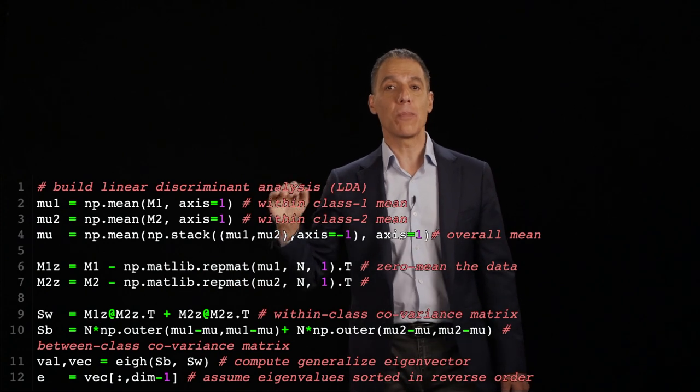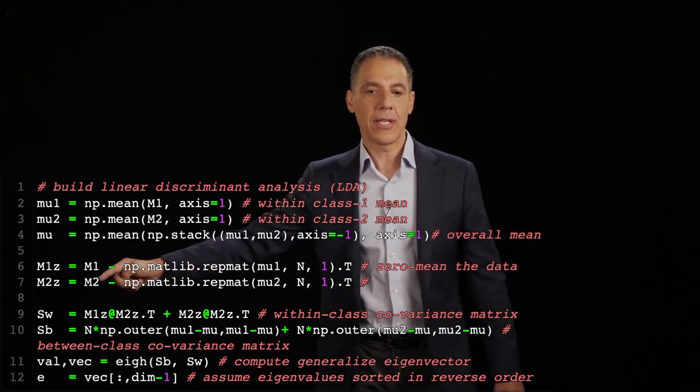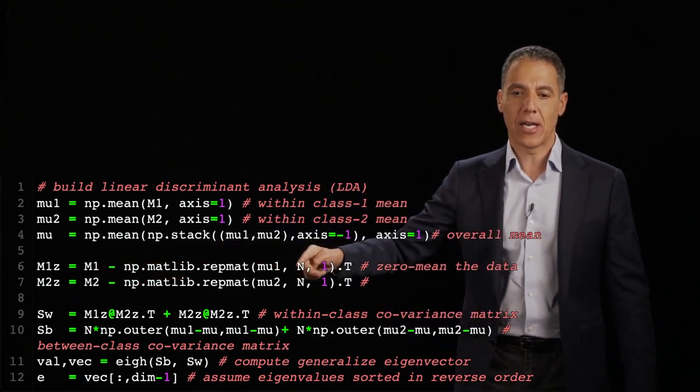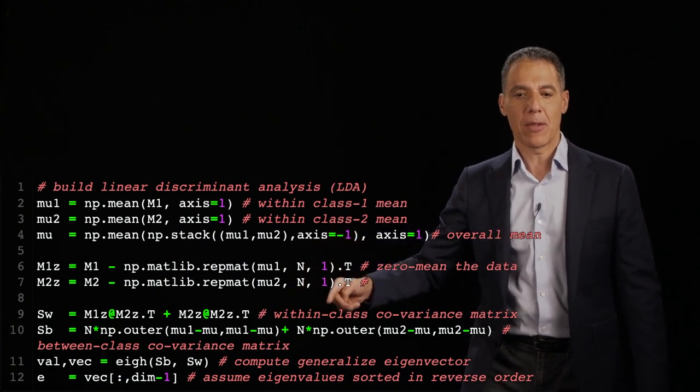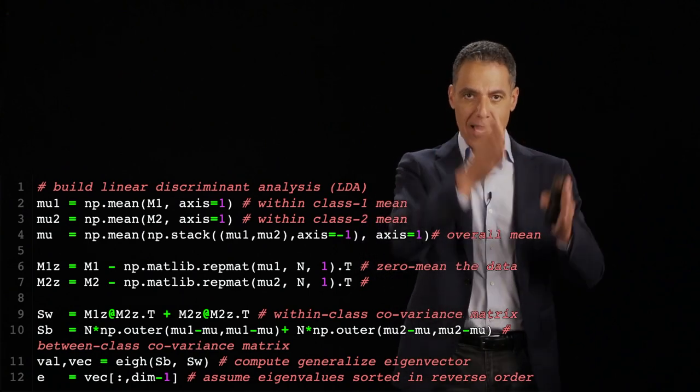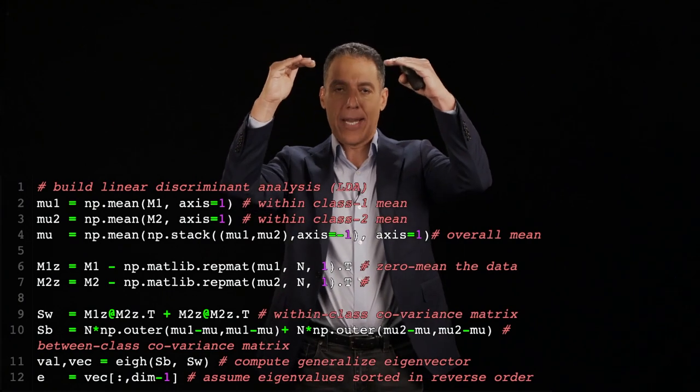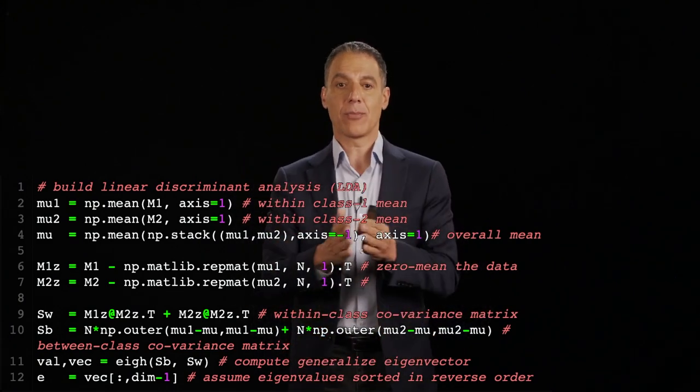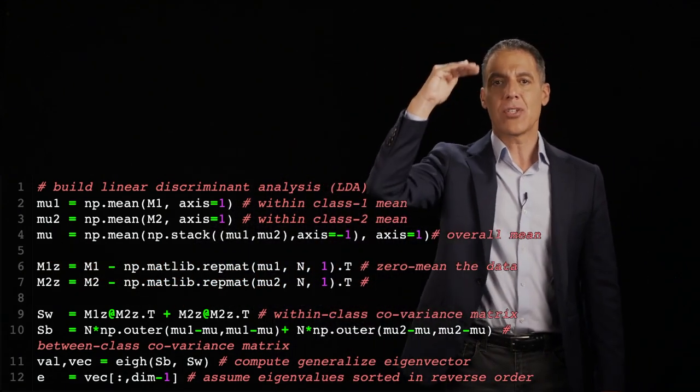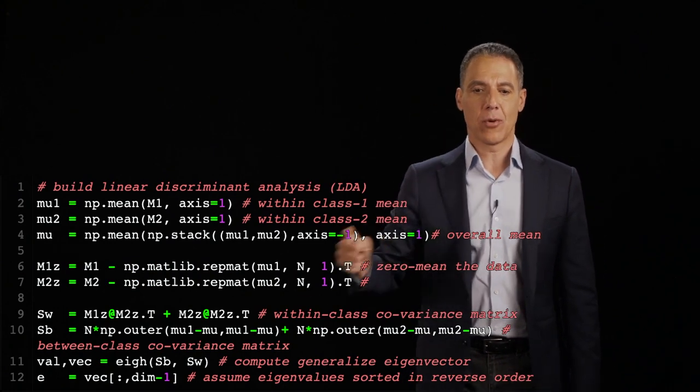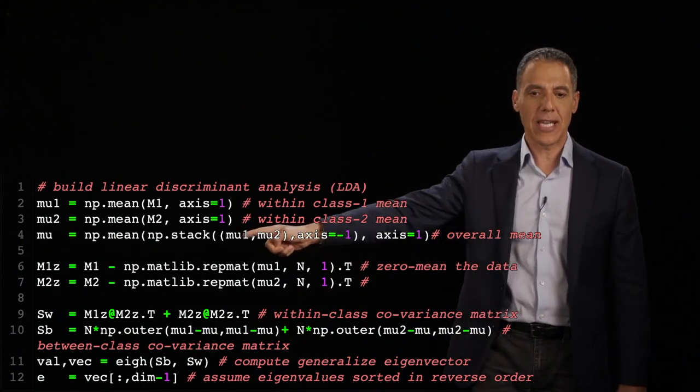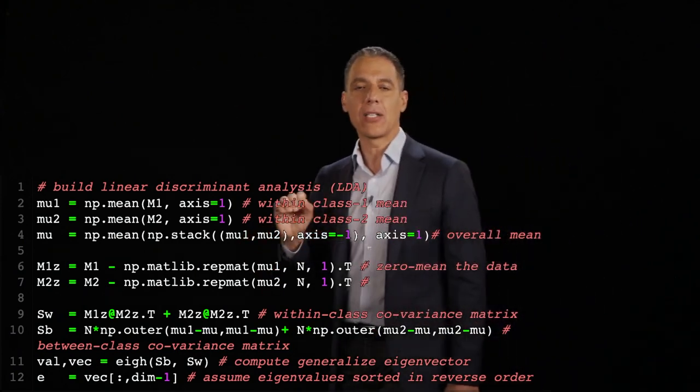Now I'm going to compute my zero mean data. So I'm going to take class 1 and subtract it from mu1. I'm going to take class 2 and subtract mu2. And you can see that I'm using the Matlib repmat. My M1 is 10,000 by 1024. I'm going to take that mu and I'm going to make a matrix that's 10,000 by 1024, and then I'm going to do a point-wise subtraction so each vector associated with a patient gets zero mean. Same thing for M2. So M1z and M2z are now the zero mean data.